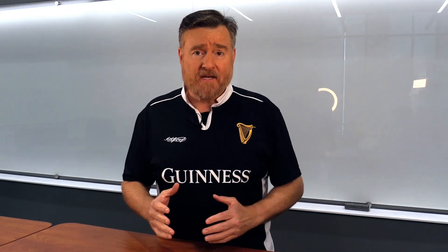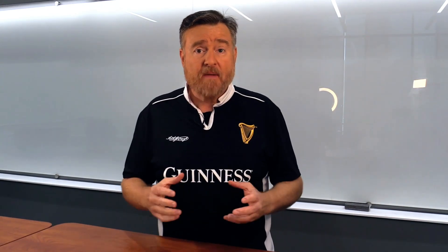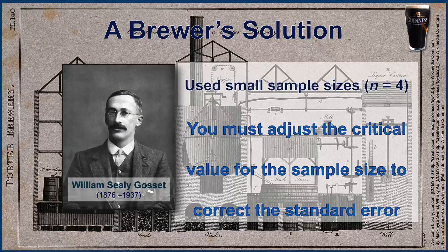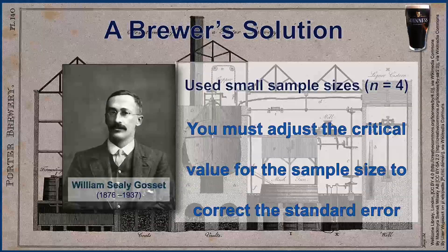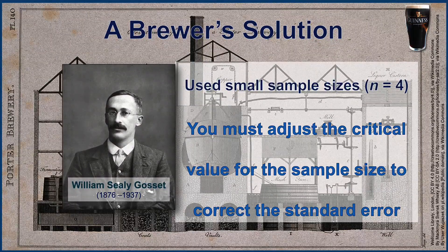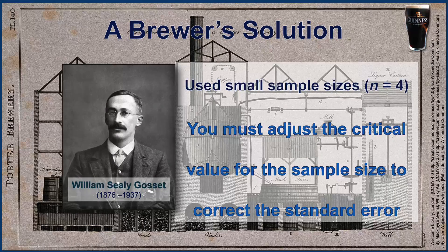As you might imagine, mixing up batches of barley malt is a time-consuming process. You don't want to be mixing up 30 batches for every strain of barley. So Gossett was using much smaller sample sizes — mixing up maybe four batches of barley malt for every strain — and using those numbers to make his estimations. And here is where he ran into the problem of the bias of the sample standard deviation being used as an estimator for the population standard deviation. With such small samples, the bias was predictably bad.